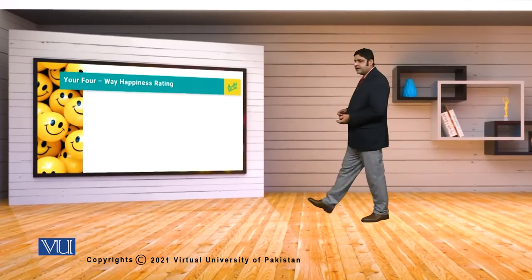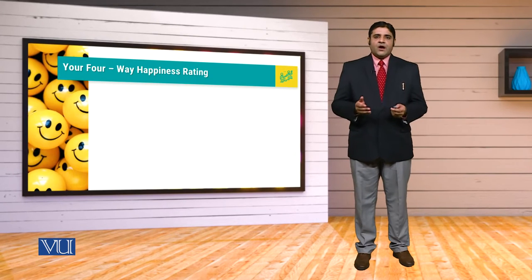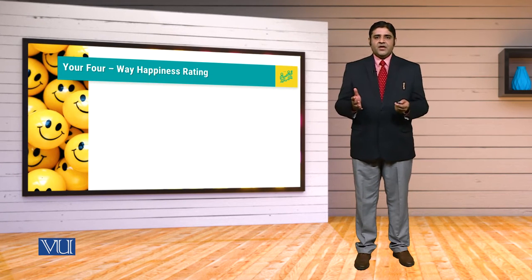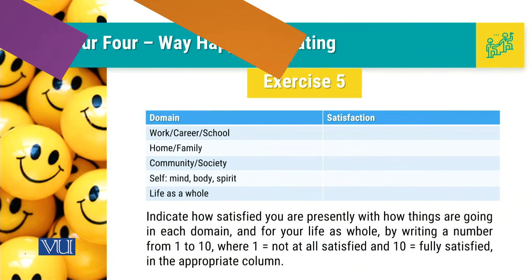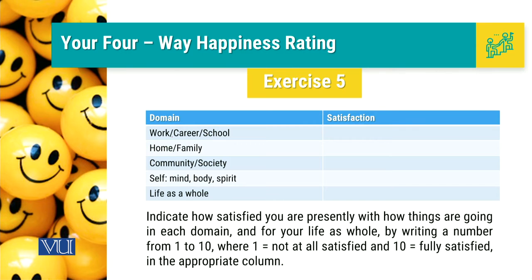The first exercise is going to talk about our happiness rating — how happy we are with our four-way domains: how happy we are with our home, our community, our self, and our profession. For that we need to fill a table which is exercise number five, and let's fill this table together. There are four domains: work, home, community, and self, and then a fifth — life as a whole. The rating scale goes from one, meaning not at all satisfied, to ten, meaning fully satisfied.